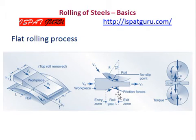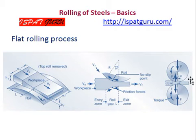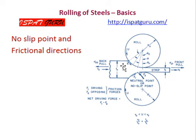There is a roll, an exit zone, and this is the no-slip point. One can see the force being applied by the rolls and the reaction force from the workpiece. Another figure shows the no-slip point and the positional forces. This is the neutral point, the driving force of the rolls, the back pull, the movement of the workpiece, and the front pull and movement of the workpiece. Two rolls are shown here.